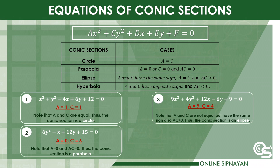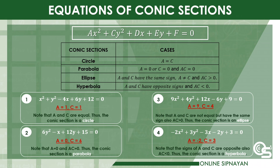Example 3: 9x² + 4y² + 12x − 6y + 9 = 0. Here a = 9 and c = 4. Since a and c are not equal but have the same sign, and ac is greater than zero, the conic section is an ellipse. Example 4: −2x² + 3y² − 3x − 2y + 3 = 0. Here a = −2 and c = 3. The signs of a and c are opposite, and multiplying them gives a negative number, so ac is less than zero. Thus, the conic section is a hyperbola.